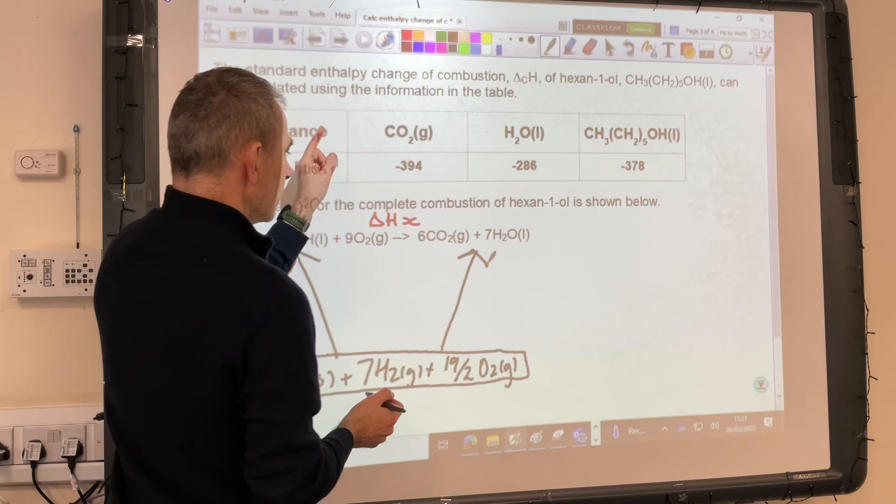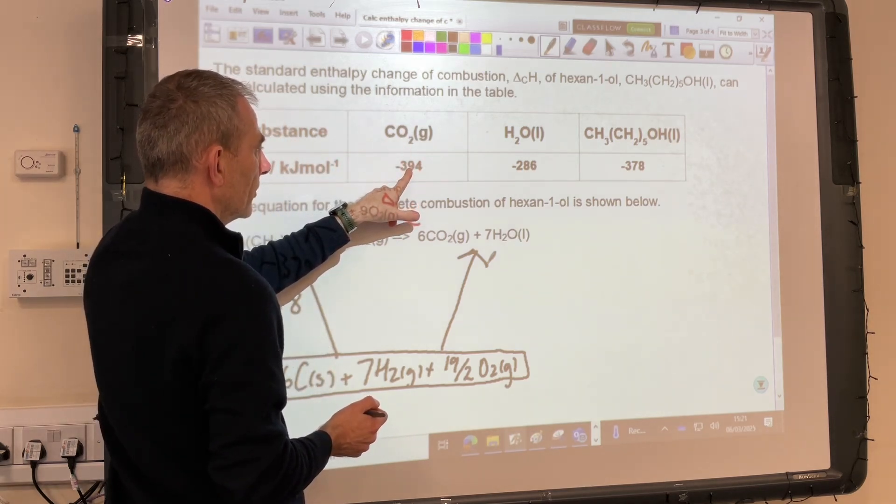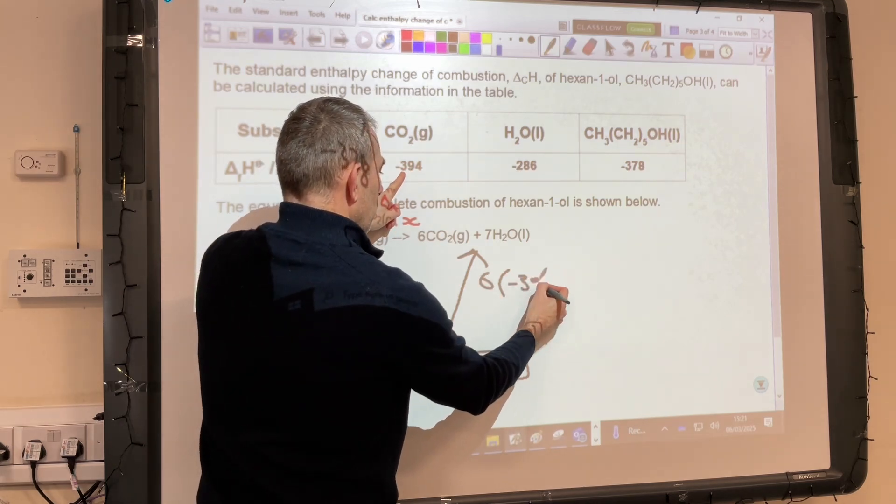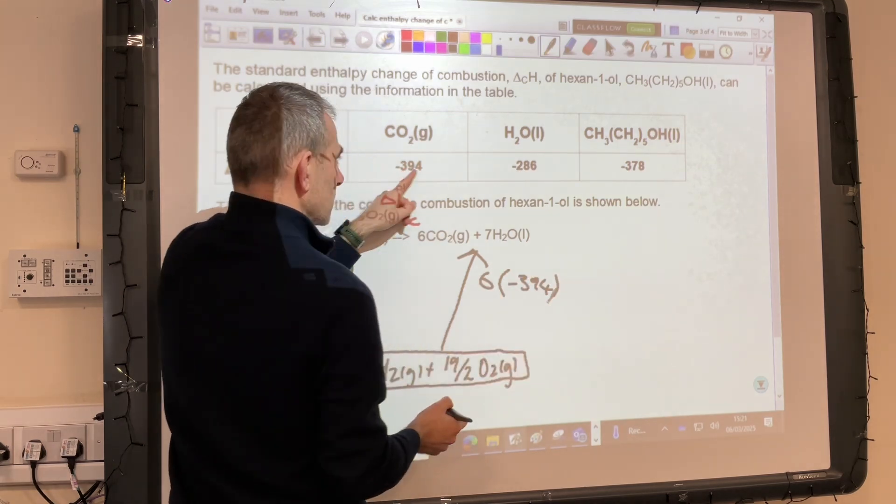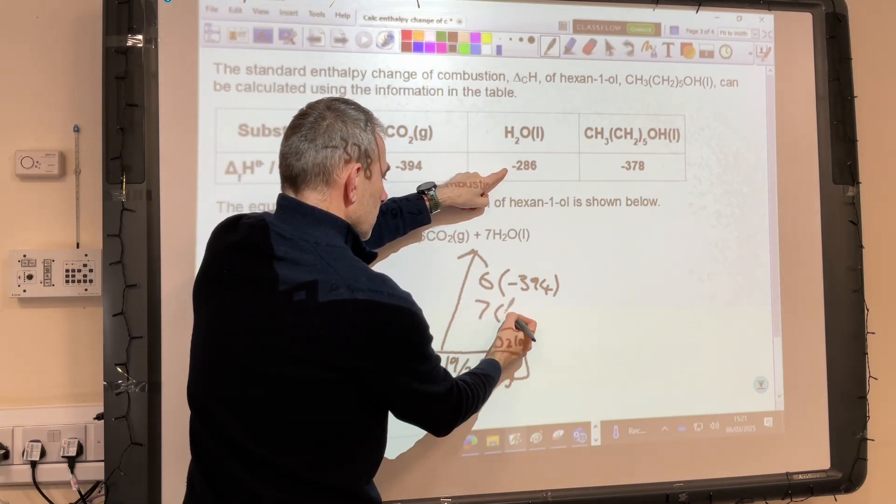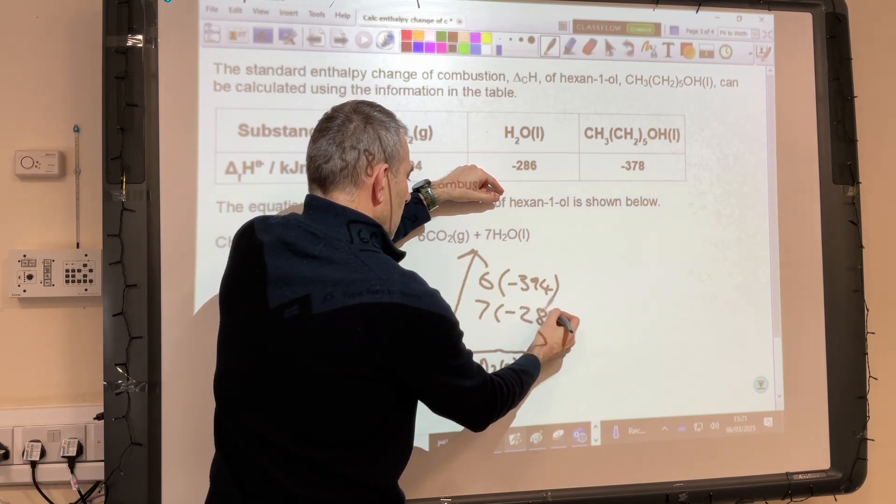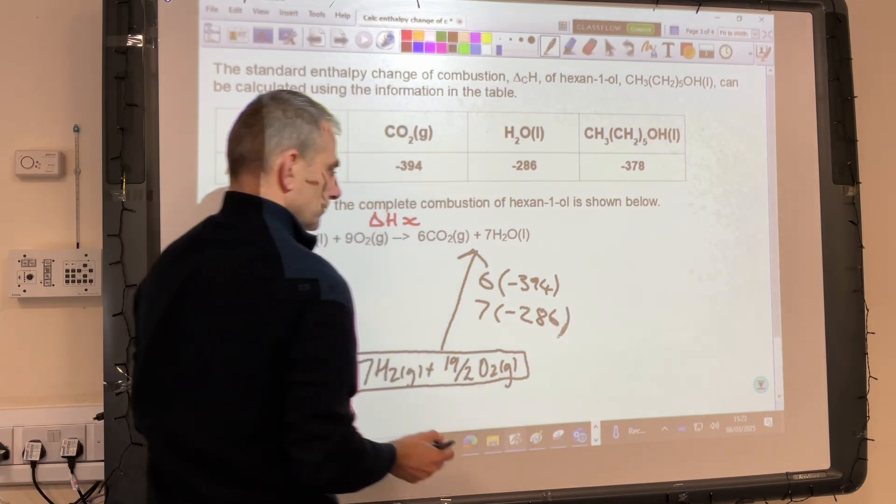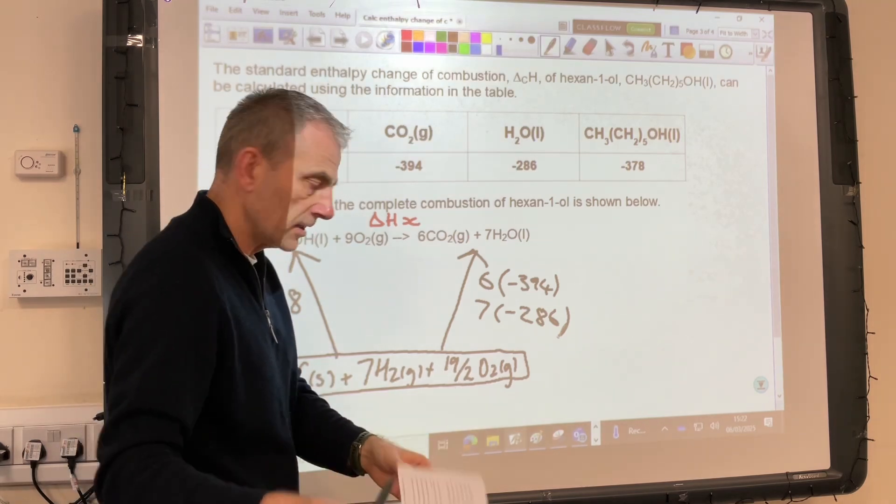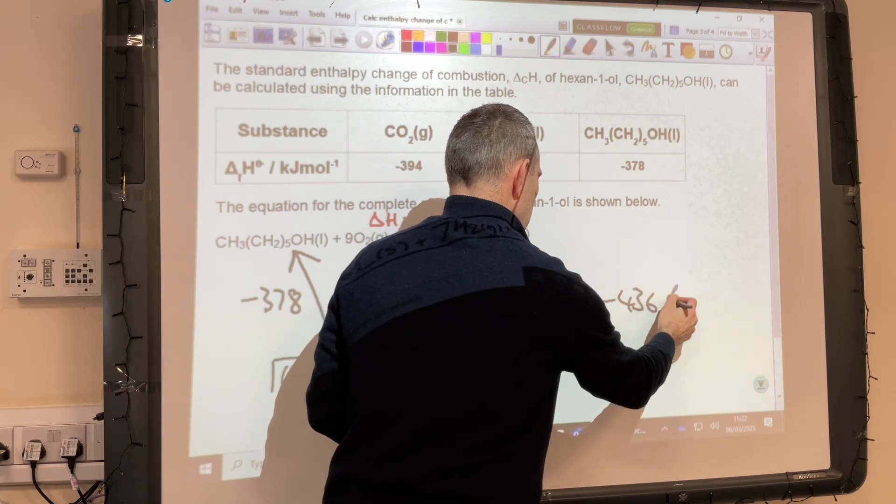Remember, the table is for 1 mole. The value in the table is for 1 mole formed. So we need 6 times minus 394 and we're going to add that to 7 moles of the H2O. So 7 times minus 286. So I've got the answer here. The total of that is minus 4366.